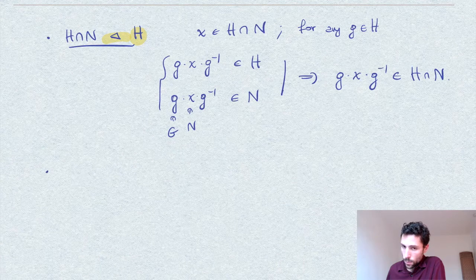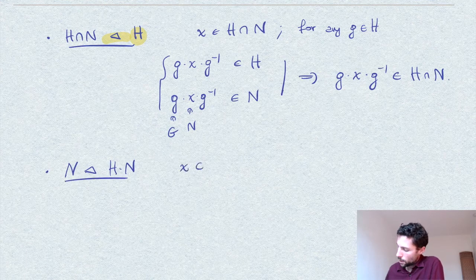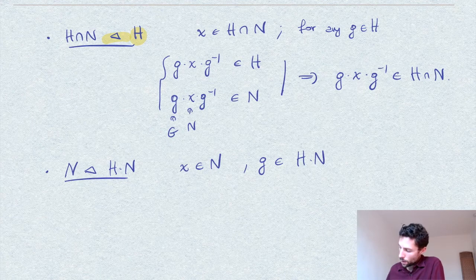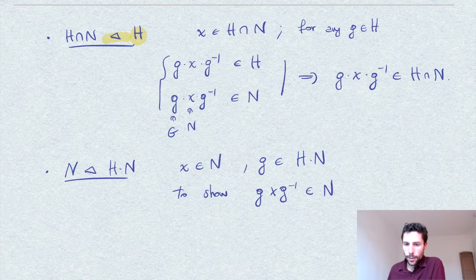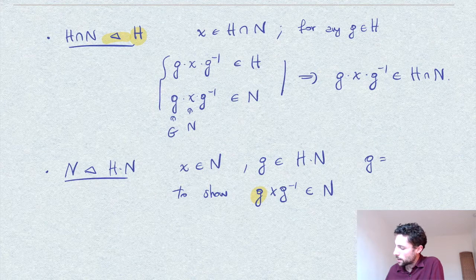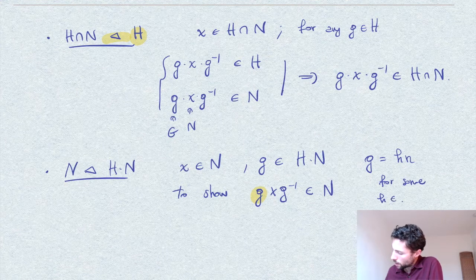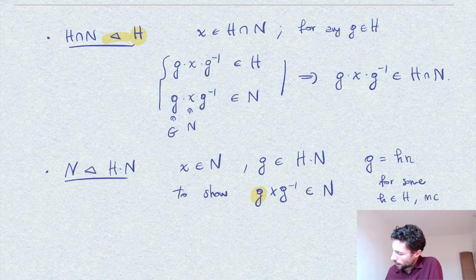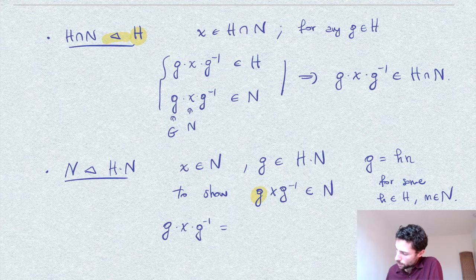For the second part, we want to show that N is a normal subgroup of the product HN. We take an element x in N and an element g in the product group HN. We need to show that g·x·g⁻¹ is in N. Since g is in HN, we can write g = h·n for some h in H and n in N.